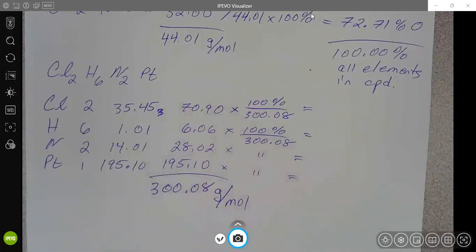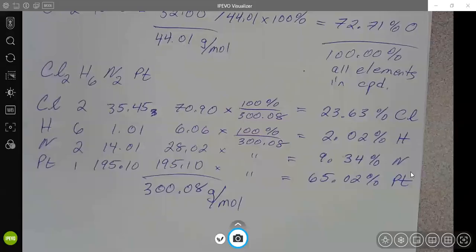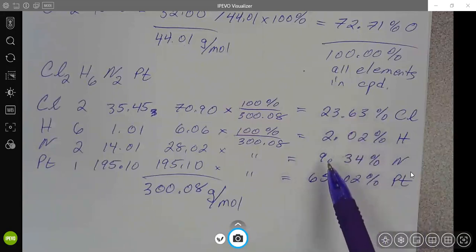But why don't you go ahead and pause the video here and calculate the percents. Last chance to pause. And as we estimated, we have close to 2% for hydrogen, and we have close to 66% for the platinum. And you should recognize that the other two percentages are somewhere in between those.